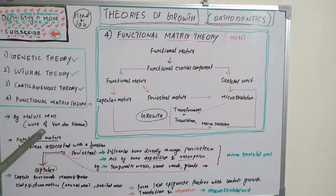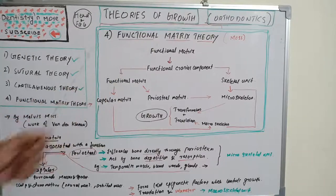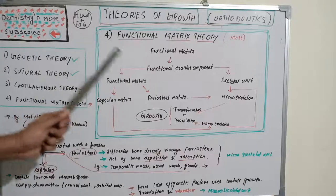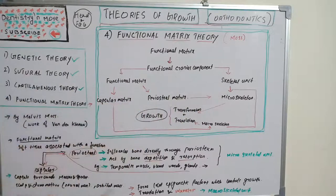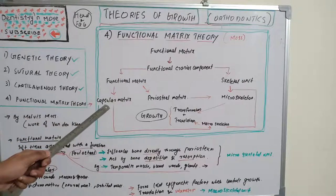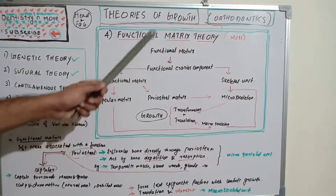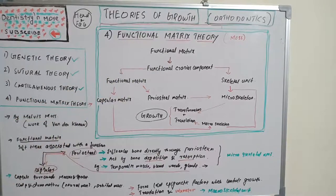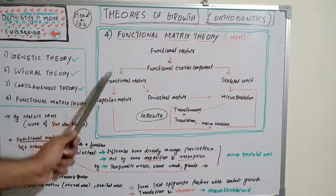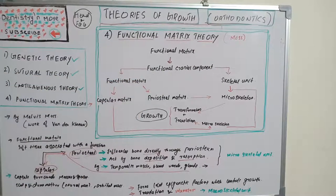It was originally the work of Vanterclaw, and later Melvin Moss modified it. This functional space, also known as functional matrices, actually has two units: the functional matrix and the skeletal unit. The functional matrix is further divided into capsular matrix and periosteal matrix.